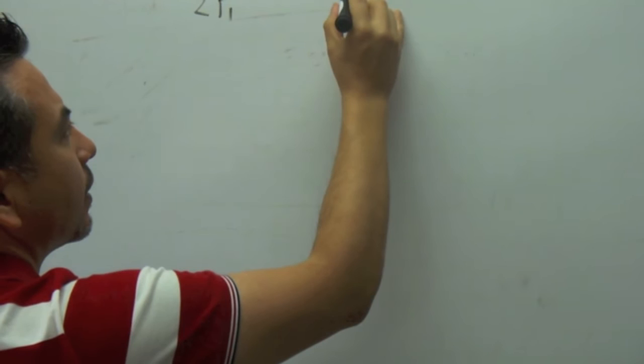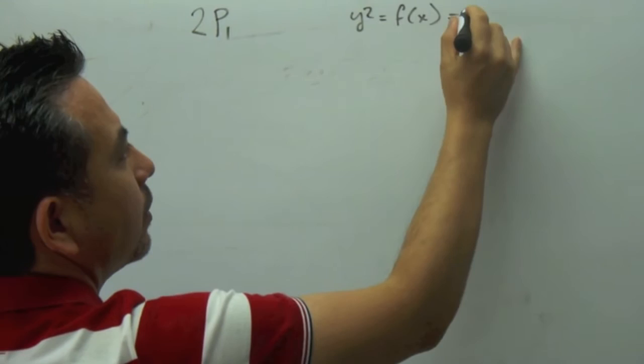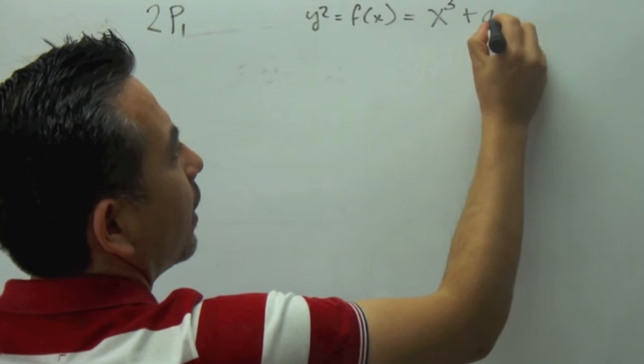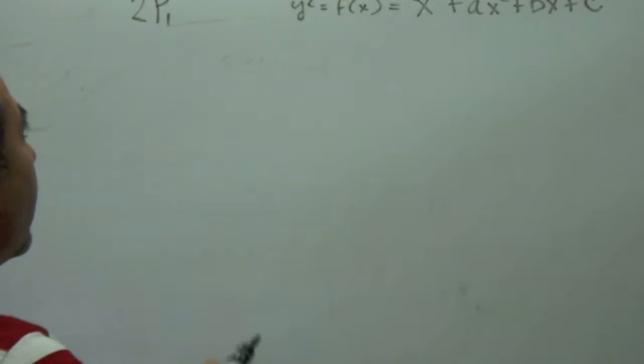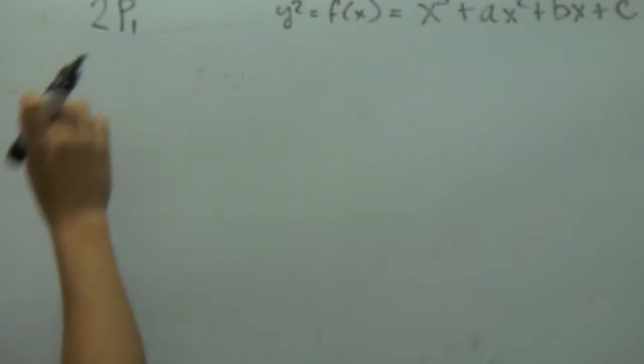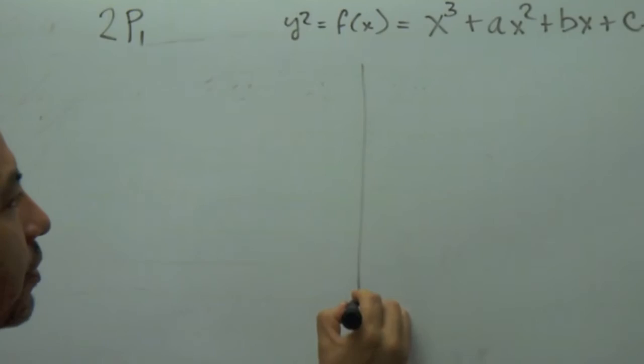Last time we said that y squared equals f of x, and this is equal to the form x cubed plus ax squared plus bx plus c. What we wanted to do today in this clip is to add the point to itself, which is the geometric reflective geometric.